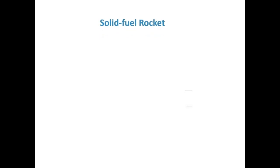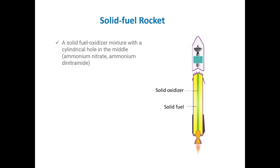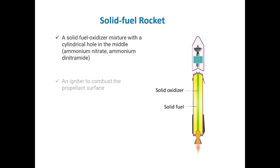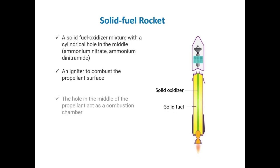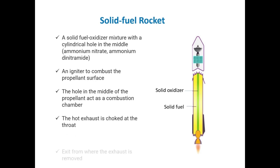Now we have a look at the solid fuel rocket. A solid fuel rocket contains a solid fuel-oxidizer mixture with a cylindrical hole in the middle, ignited to combust the propellant surface. The hole in the middle of the propellant acts as a combustion chamber. The hot exhaust is stopped at the throat and exits from where the exhaust is removed.